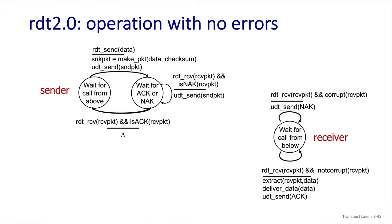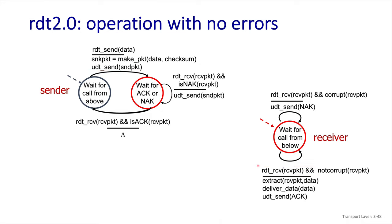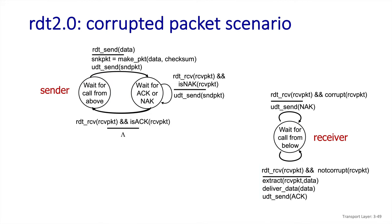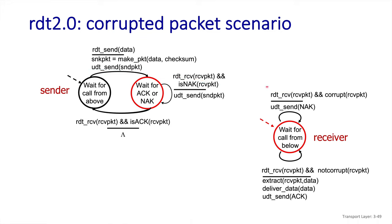Let's walk through the sequence of events when there are no errors. The sender initializes to the waiting-for-data state and the receiver initializes to its only state, waiting for the call from below. The first possible event is that the application wants to send data. The transport protocol creates the packet and sends it over to the receiver. With no errors, the receiver extracts the data and sends the acknowledgement back. In the case where an error occurs, the same initial states apply. The application sends the data, the packet is created and sent, but this time it gets corrupted and the checksum fails. The receiver sends back a negative acknowledgement. The sender sends the packet again — meaning it must have saved the data — and this time it arrives uncorrupted, is delivered to the application, and acknowledged.